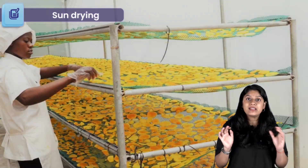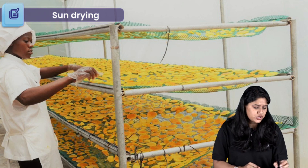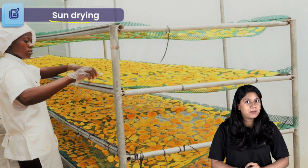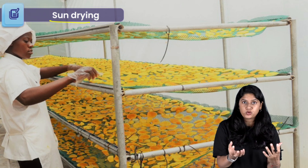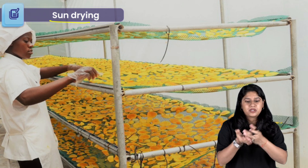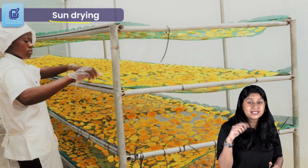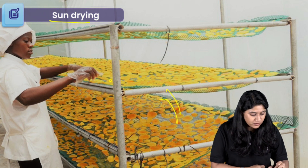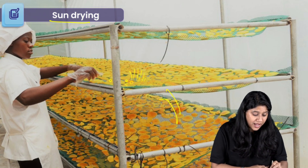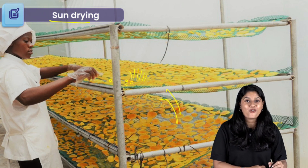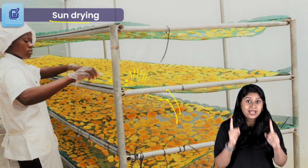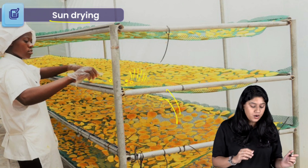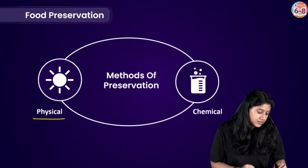The third physical method is sun drying, which is very easy. I'm sure you would have seen your grandparents or parents do it, especially if they are making pickles. If you have any fruit and want to make a pickle out of it, you put it under the sun. Sun drying takes all the moisture out — whatever water content is there moves out — hence increasing the shelf life of the food. Because if moisture is present, microorganisms can attack the food.